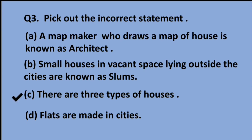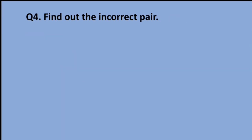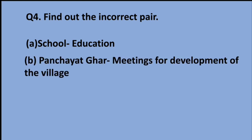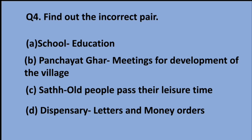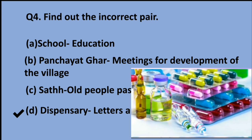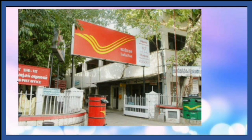Question number four: find out the incorrect pair. Pair A: school — education. Pair B: Panchayat Ghar — meetings for development of village. Pair C: old people pass their leisure time. Pair D: dispensary — letters and money orders. The incorrect pair is D, because we get medicines from a dispensary, while letters and money orders are received from the post office.